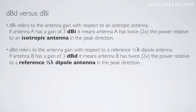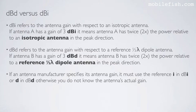dBd refers to an antenna gain with respect to a reference half-wave dipole antenna. If antenna B has a gain of 3 dBd, it means antenna B has twice the power relative to a reference half-wave dipole antenna in the peak direction. If an antenna manufacturer specifies its antenna gain, it must use the reference i in dBi or d in dBd. Otherwise, you do not know the antenna's actual gain.